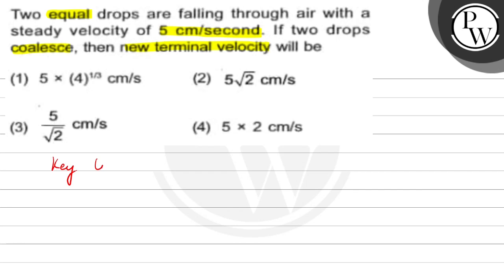This question's key concept is: Terminal velocity vt equals 2 r squared (rho minus sigma) g divided by 9 eta.